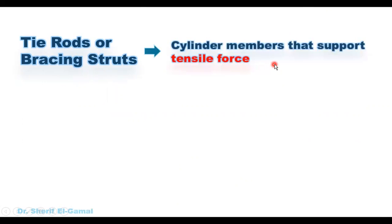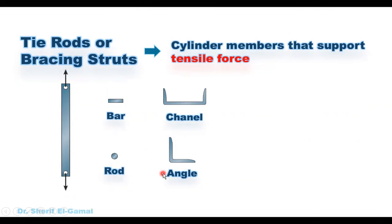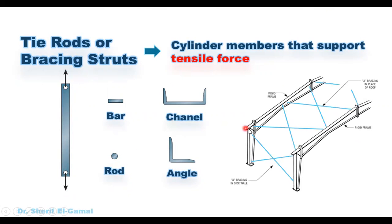Tyros or bracing struts are linear members that support axial forces. This shows an elevation of a strut. If you take a cross section in the strut, they are usually made from rods, bars, angles, or channels. These are the bracing struts that can be used to make a bracing or connecting two main frames, as we can see in this photo.